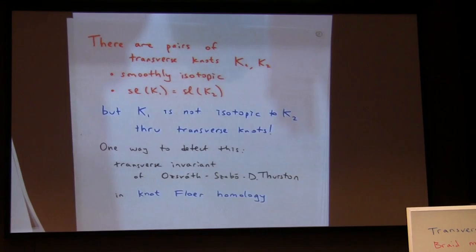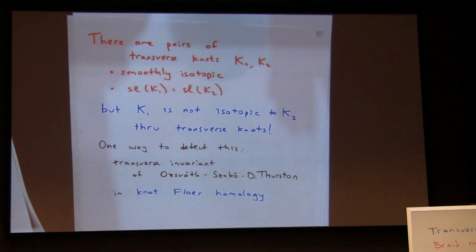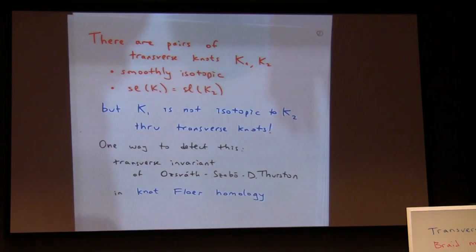There's a rich theory beyond just looking at the smooth isotopy type and the self-linking number. There are many situations where there are pairs of transverse knots that are the same smooth knot, the same self-linking number, but one is not isotopic to the other through transverse knots. One of the first invariants that could see this phenomenon was an invariant of Ozsváth–Szabó–Thurston in knot Floer homology.